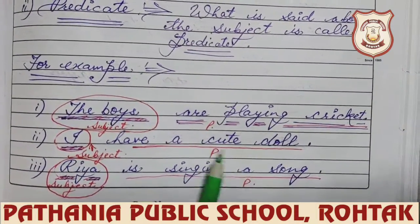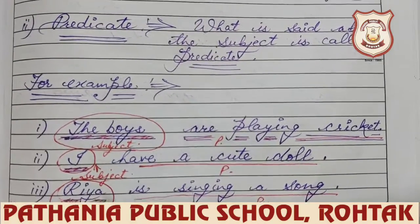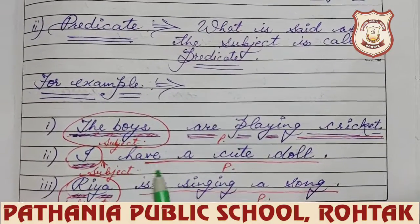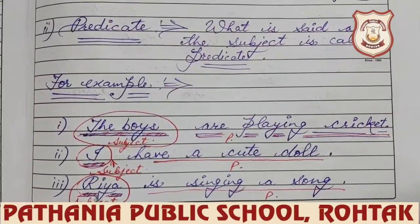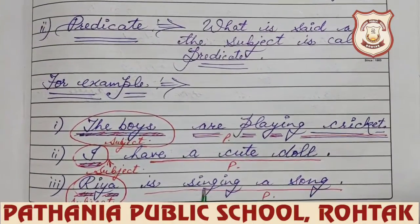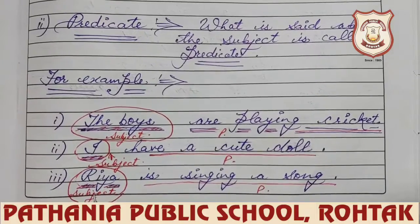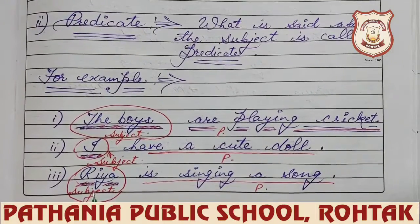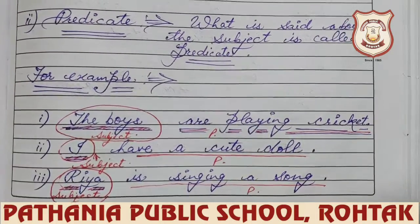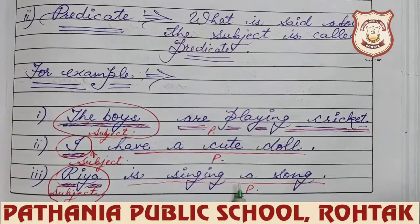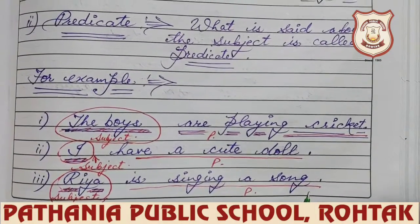'I have a cute doll.' Here, 'I' is the subject and 'have a cute doll' is the predicate part. 'Ria is singing a song.' Ria is the subject — we are talking about whom? We are talking about Ria. So Ria is the subject and 'is singing a song' is the predicate part.